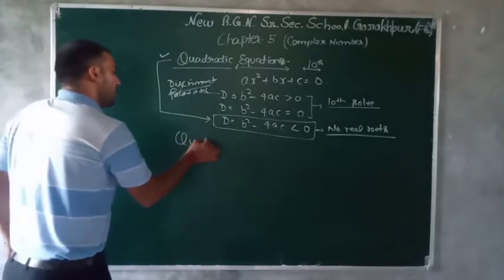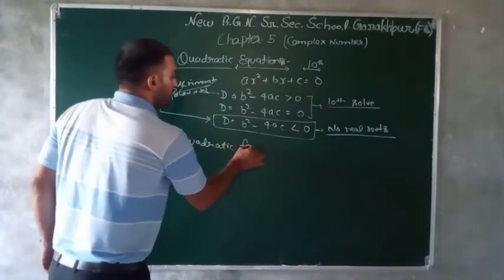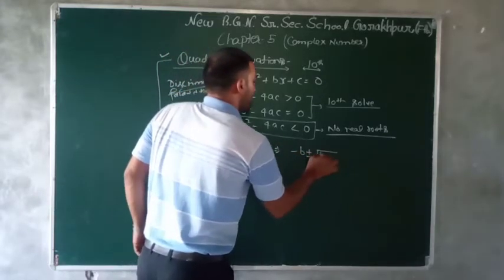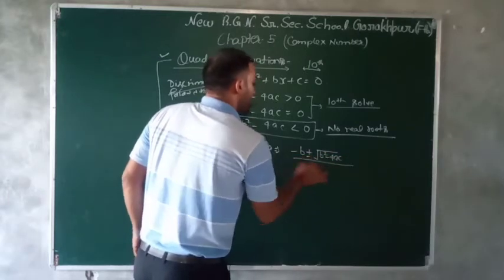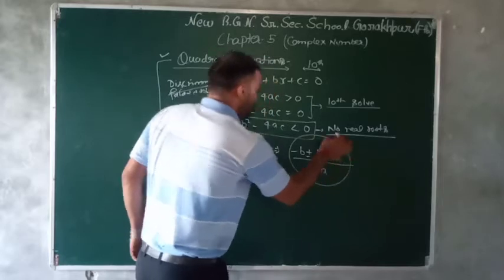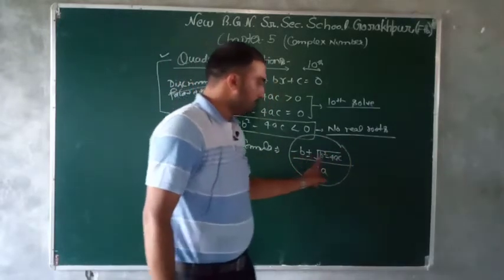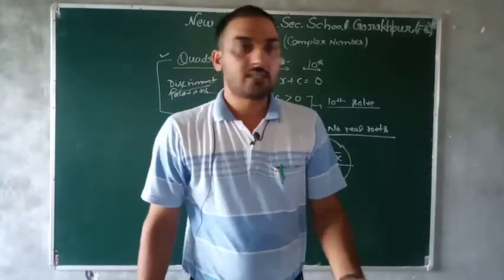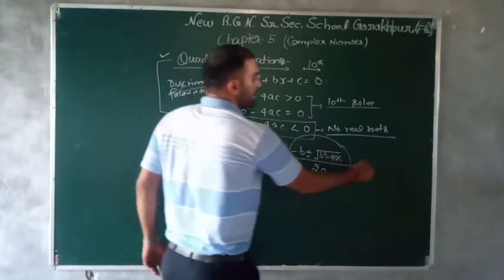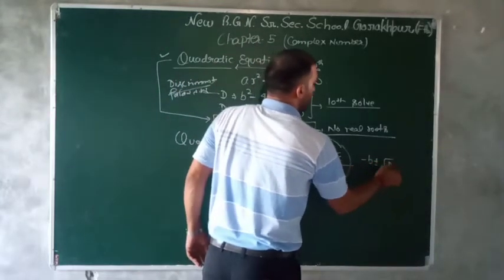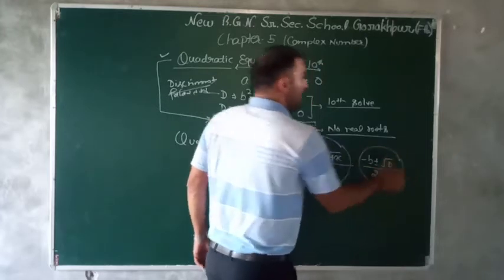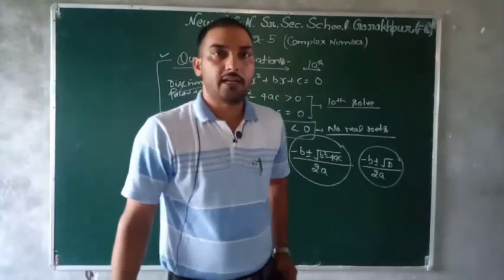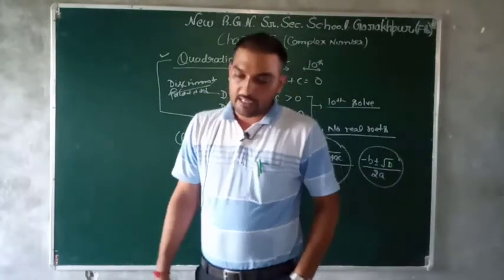एक चीज़ और — quadratic formula जो था वो यहाँ भी use होगा। Quadratic formula क्या है? x = (-b ± √D) / 2a। और D यानी b² - 4ac को ही D कहते हैं — D stands for discriminant।